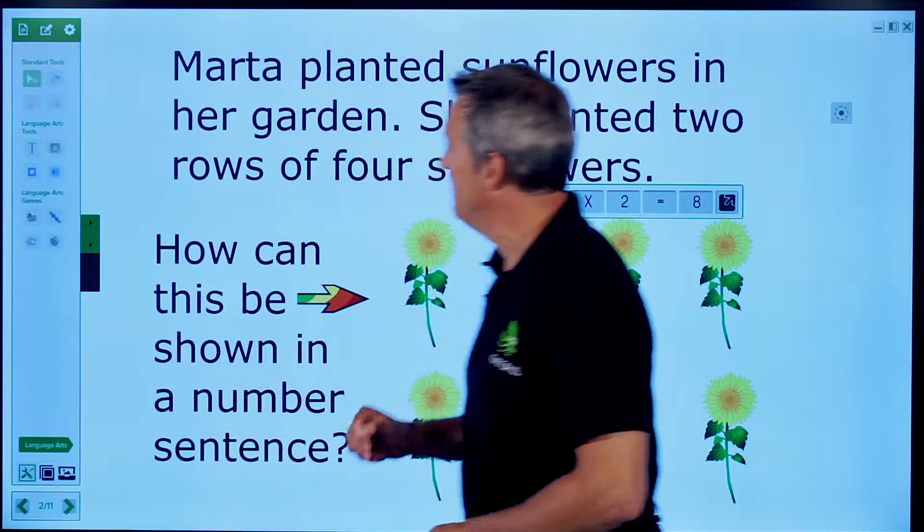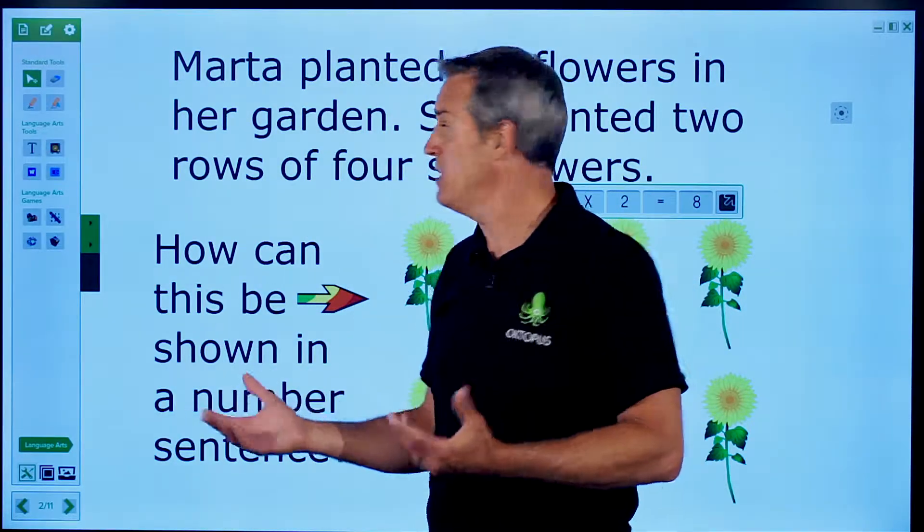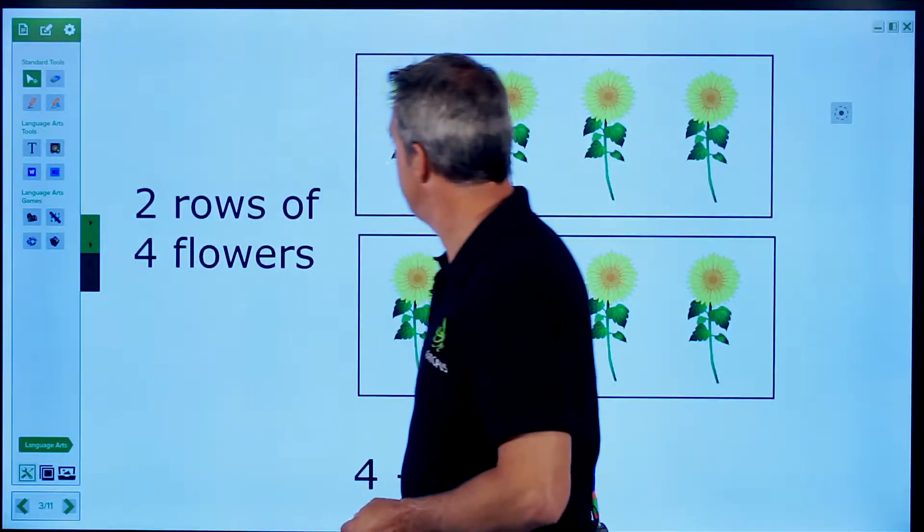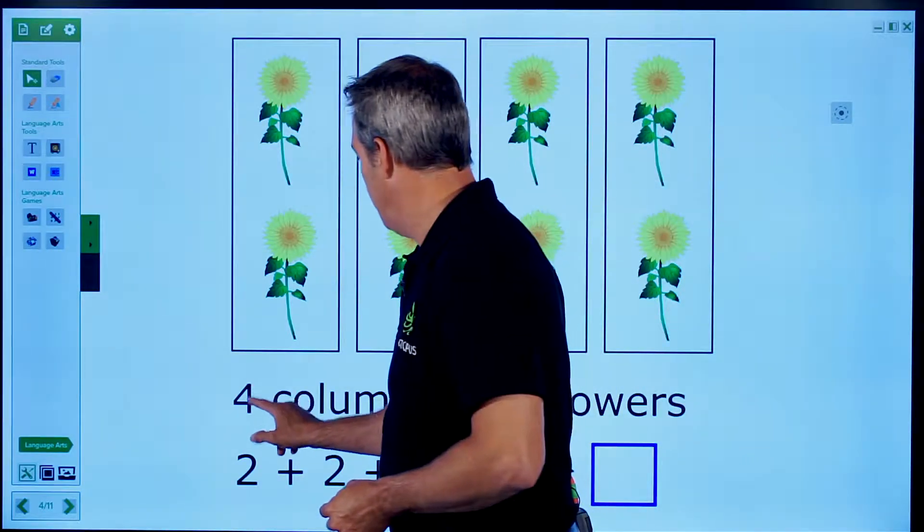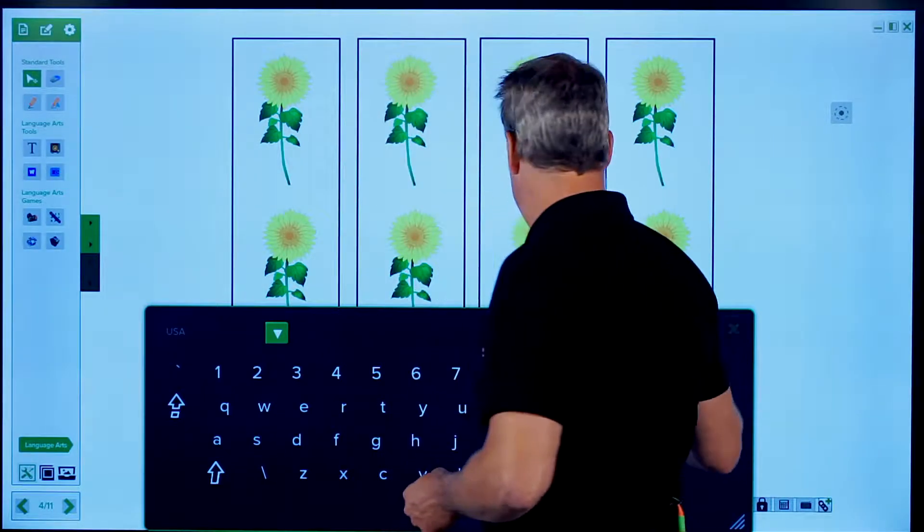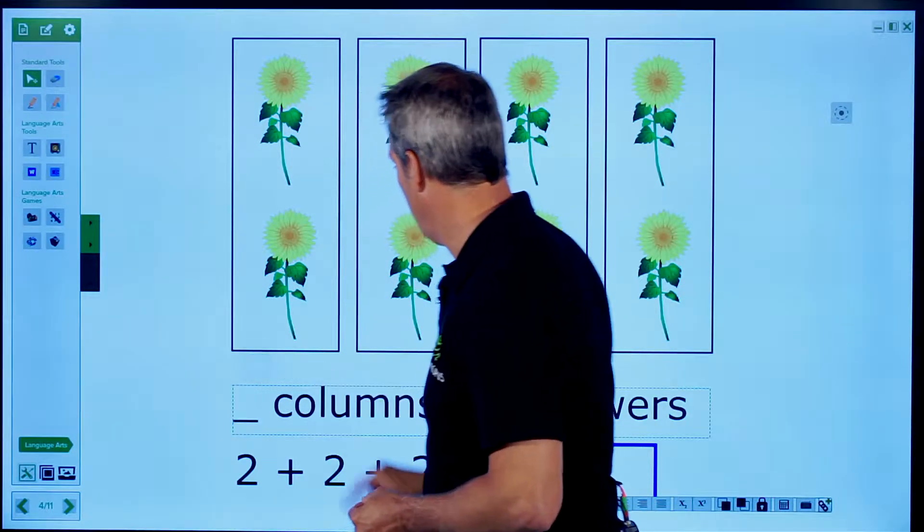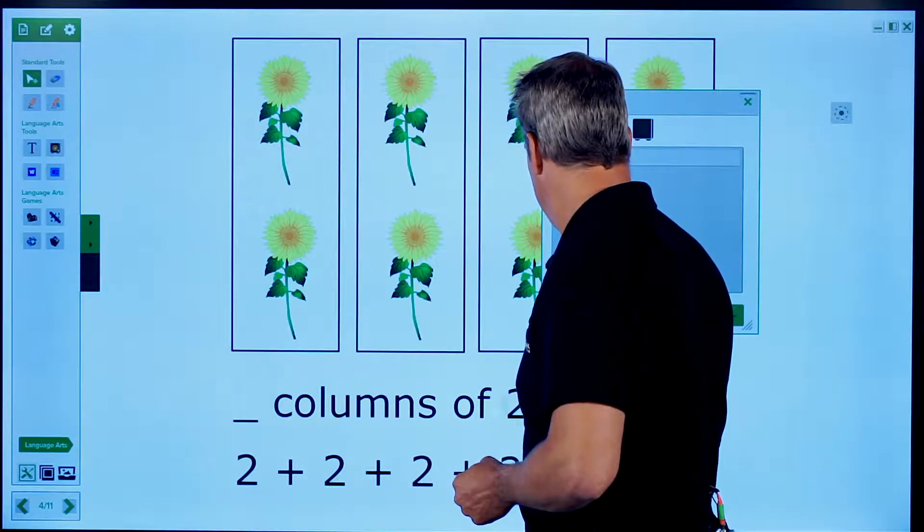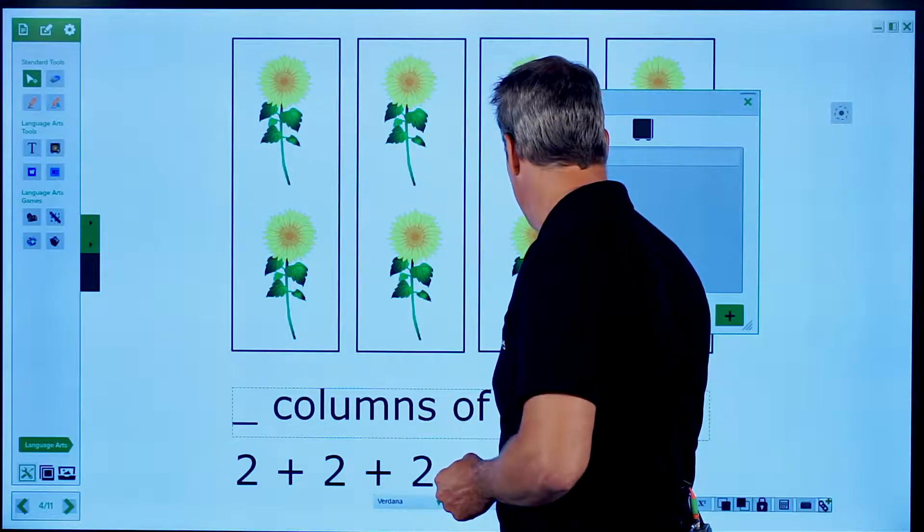I can actually demonstrate some of the other tools, even within language arts. We might take a look at this as well. I'm going to move to a new slide. So here we're dealing with four columns of two flowers. I might highlight that. And we're going to put that in the word vault.